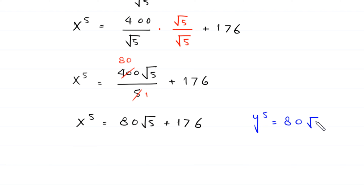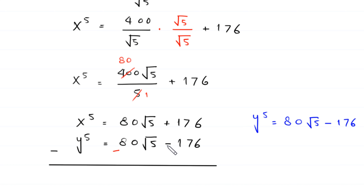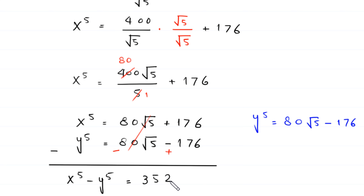Now suppose y to the power 5 equals 80 root 5 minus 176. We subtract this equation from the first: the 80 root 5 terms cancel, and we are left with x to the power 5 minus y to the power 5 equals 176 plus 176, which equals 352. Let's call this equation number one.